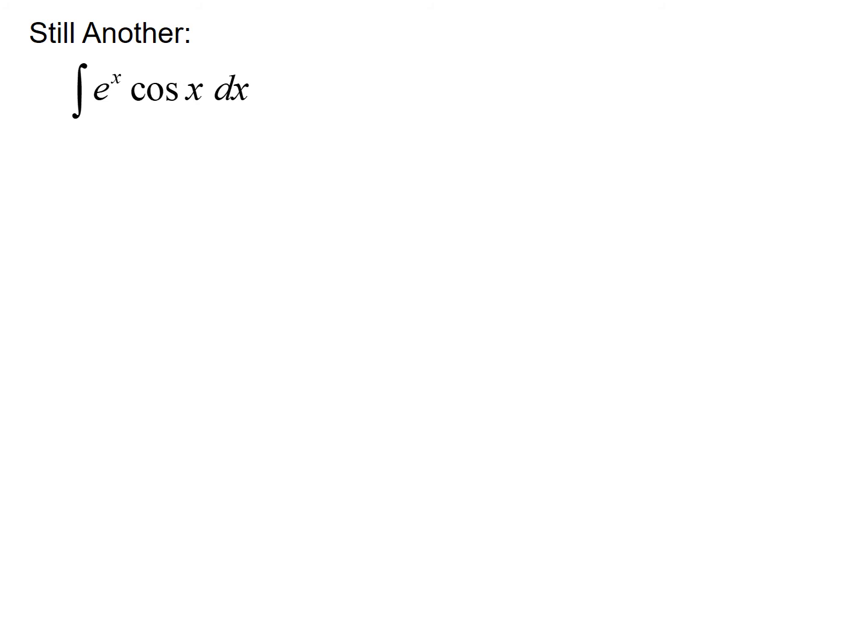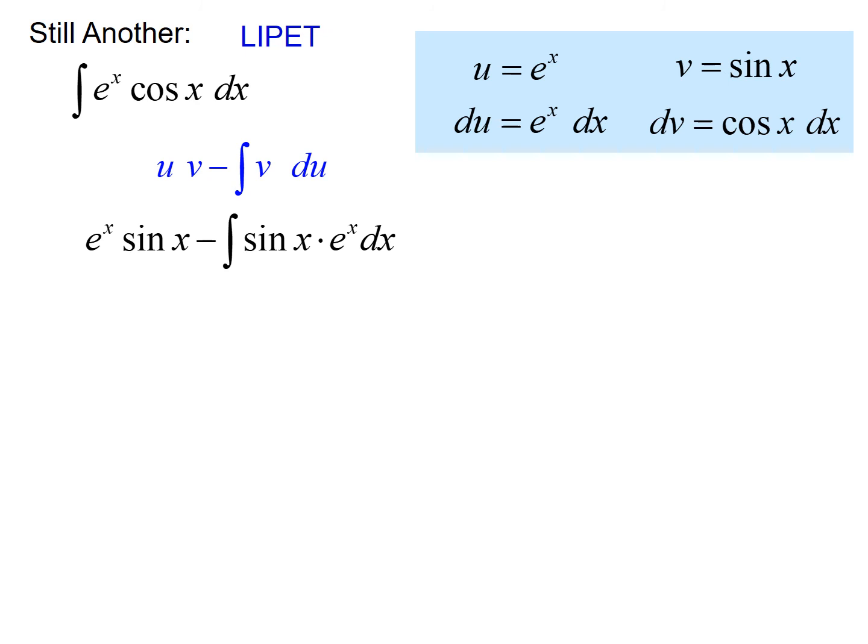If we go through LIPET here, no logs, no inverse trig, no polynomials, but we have an exponential e to the x. So take the derivative, take the antiderivative, plug them into our formula, uv minus integral v du. You might be wondering right now if this is really going to get us anywhere, because we know that as we take derivatives of sine and cosine, we just keep going around in circles, coming back to where we started. But let's just persevere here a little bit and see what happens.